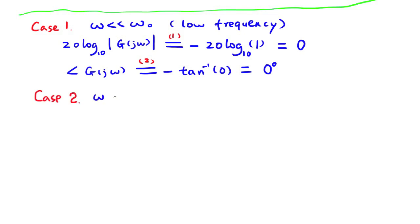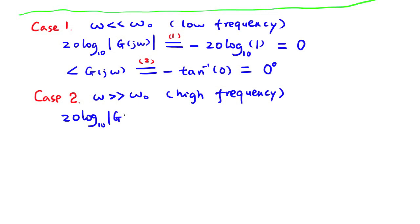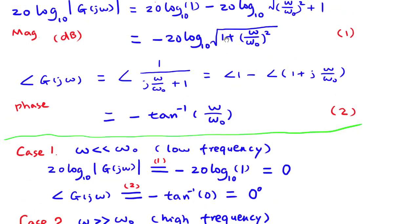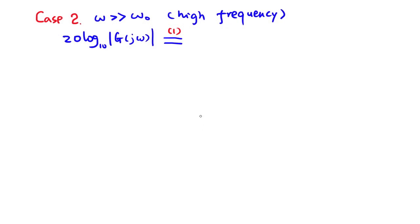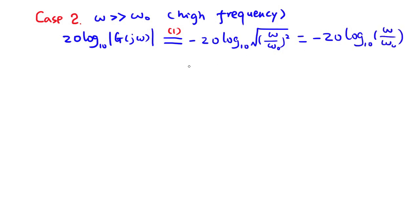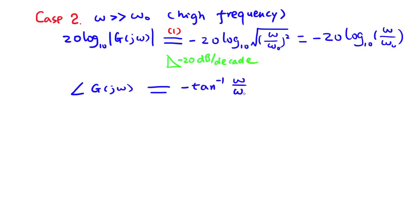Case 2: when the excitation frequency omega is much larger than the break frequency omega_0, this term is much larger than 1. The asymptote of the magnitude in decibel format is a straight line with a slope of negative 20 decibels per decade when plotted against log omega. The phase angle in this high-frequency case is equal to negative 90 degrees.